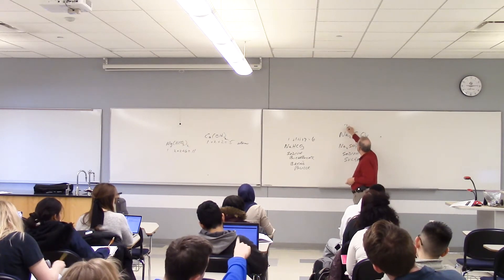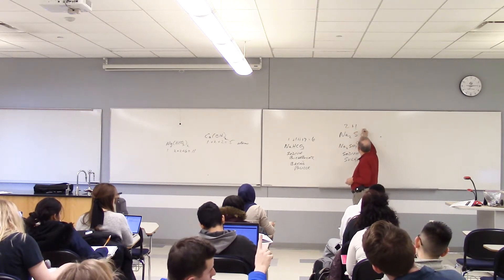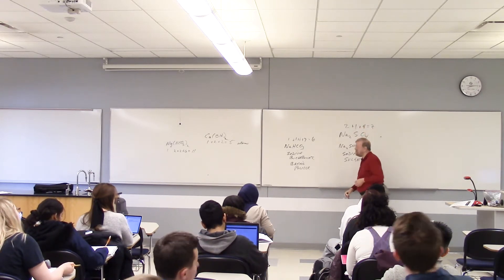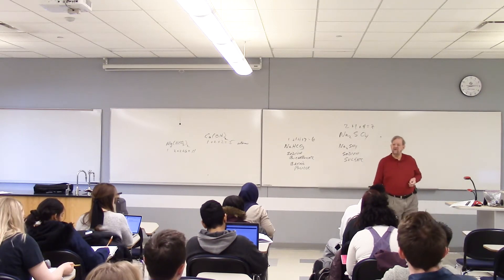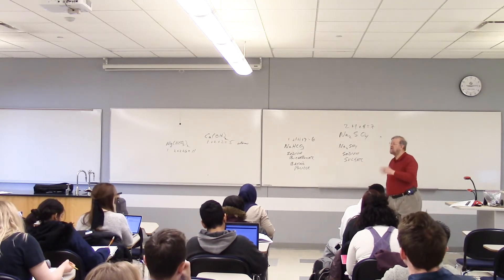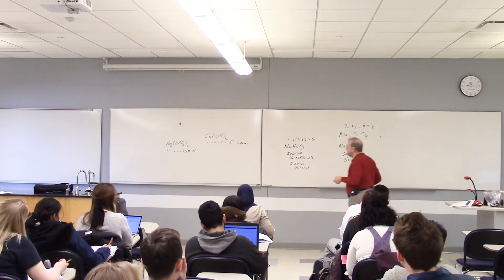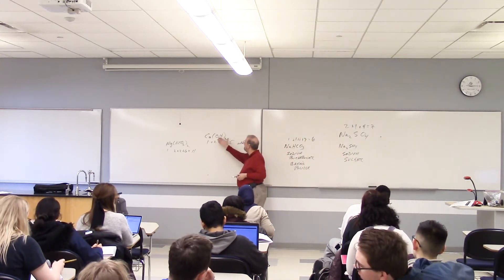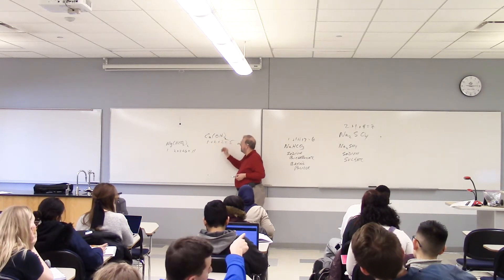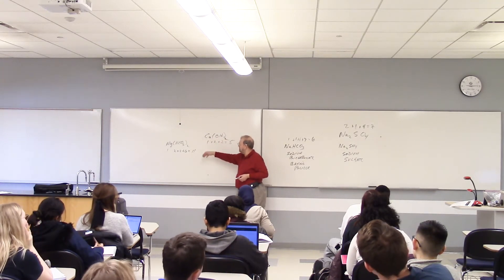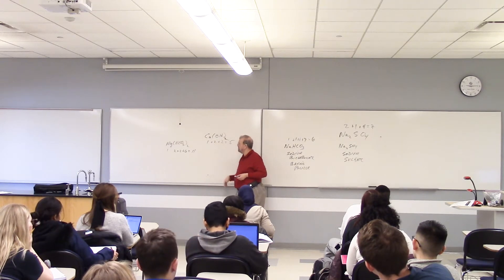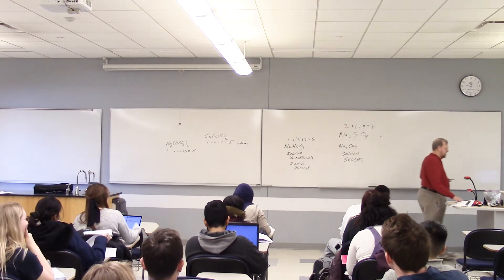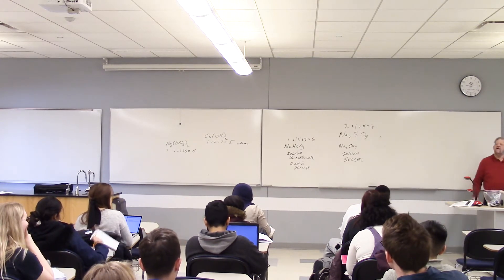Let's find out how many atoms are in sodium sulfate. Remember the rule — look at the number outside the bracket and multiply what's inside times that number. There are three oxygens times two, giving six total, and that's how you count atoms in chemical formulas, which we'll be using throughout the semester.